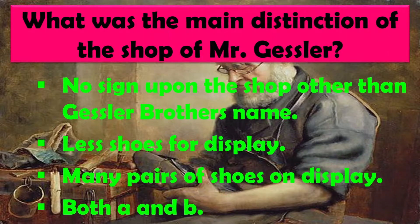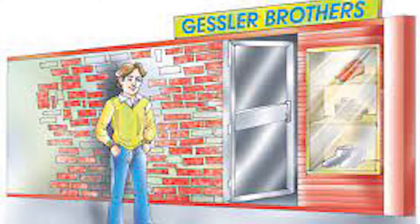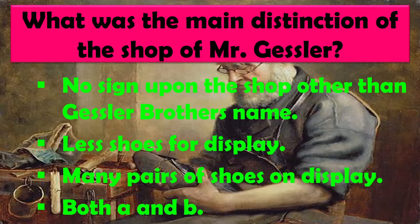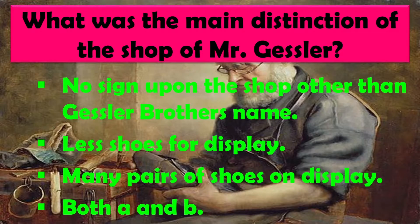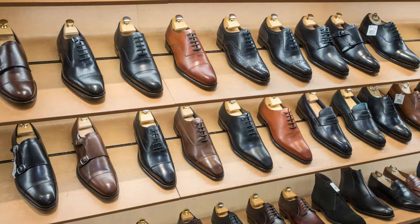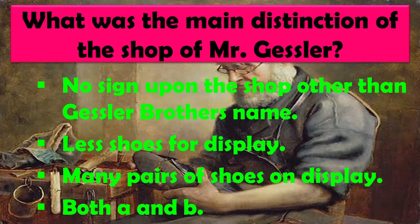What was the main distinction of the shop of Mr. Gessler? Options: No sign upon the shop other than Gessler's brother's name — koi bhi sign nahi tha, sirf Gessler brother's naam tha. Less shoes for display — dikhane ke liye thode se joote the. Many pairs of shoes on display. Both A and B. The right answer is both A and B.